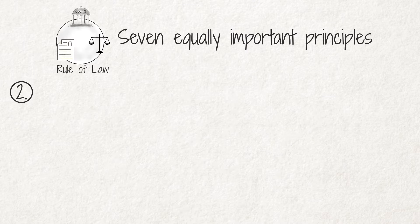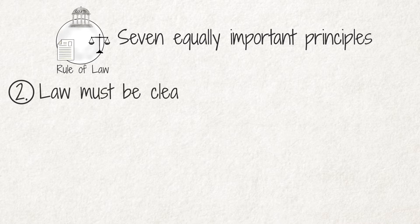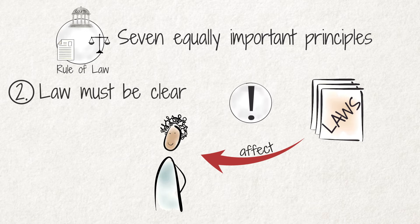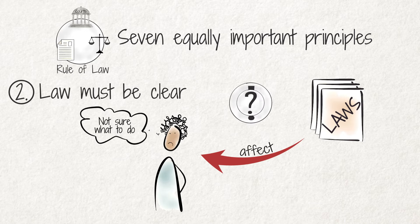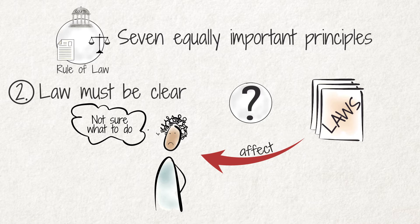Principle 2 says that the law must be clear. If we are affected by the law or decision, we must be able to determine what it means. If the law or decision is unclear or vague, we cannot adjust our behavior to ensure we comply with it.